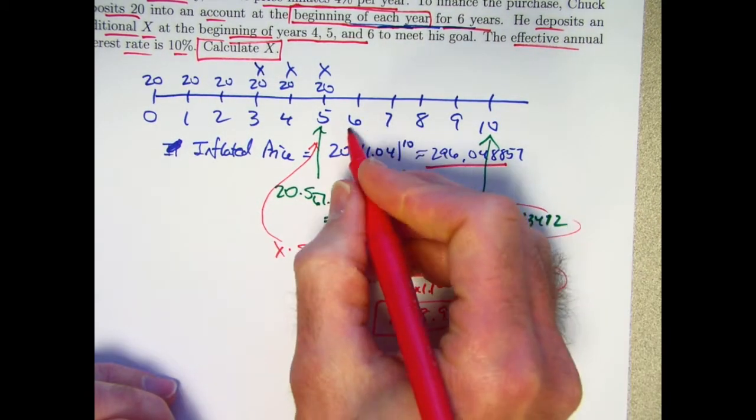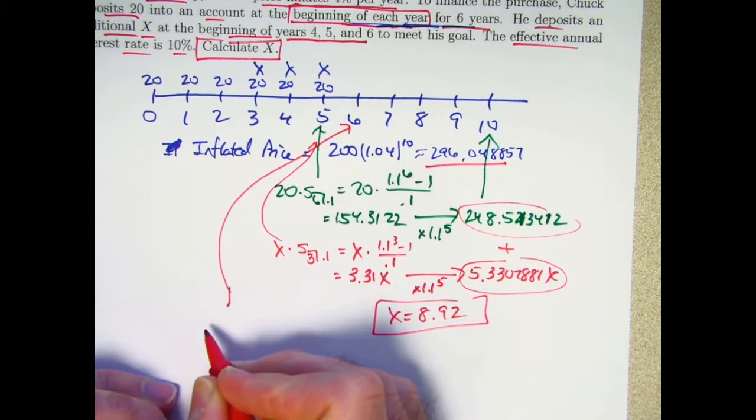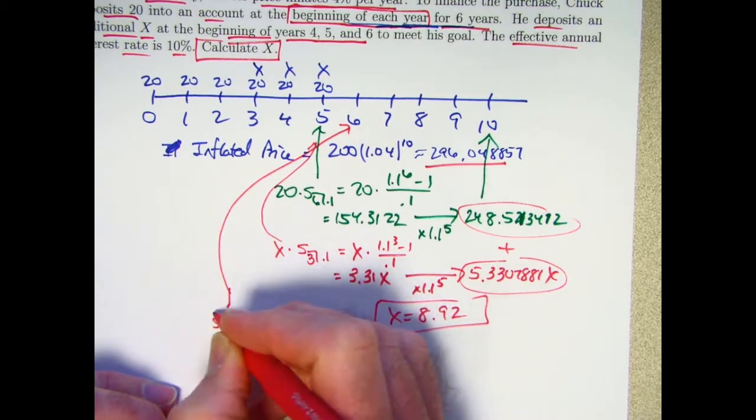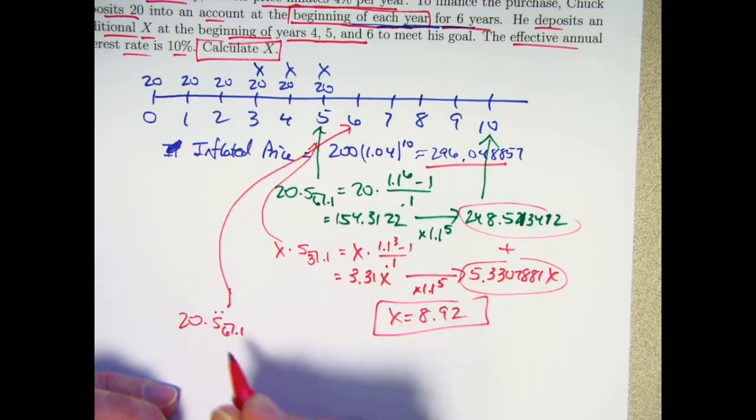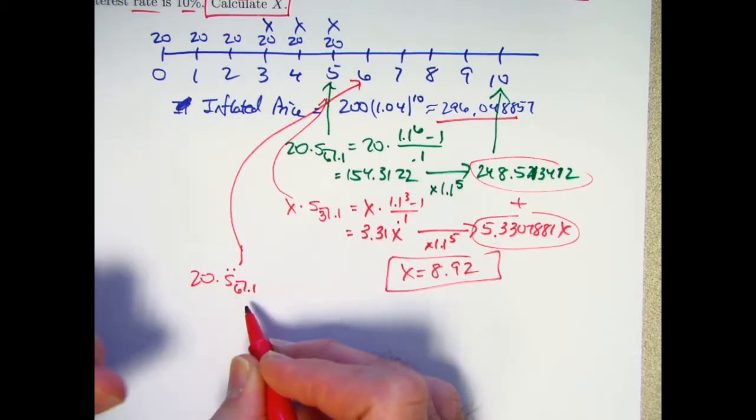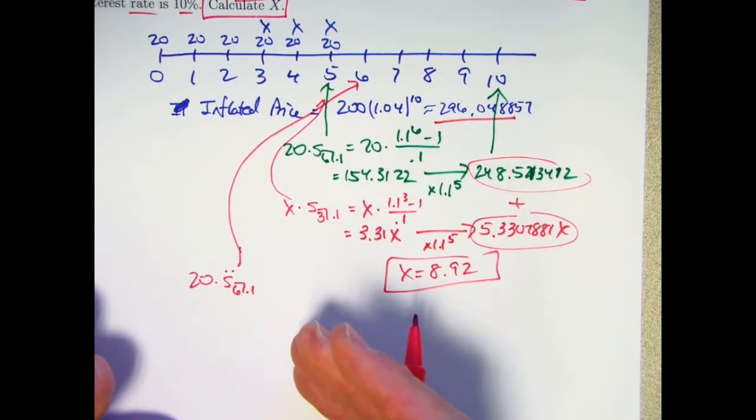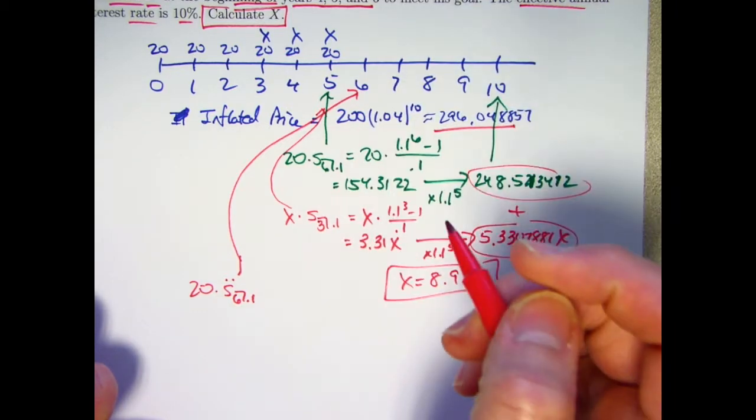If, on the other hand, you're starting at time zero and you think of those payments being the beginning of the years, it turns out you can find the future value one year after the last deposit. And you call that an annuity due instead of an annuity immediate. And the symbol for that future value is S6.1 in this case, double dot. And that's with a payment of one, so I also need to multiply by 20.